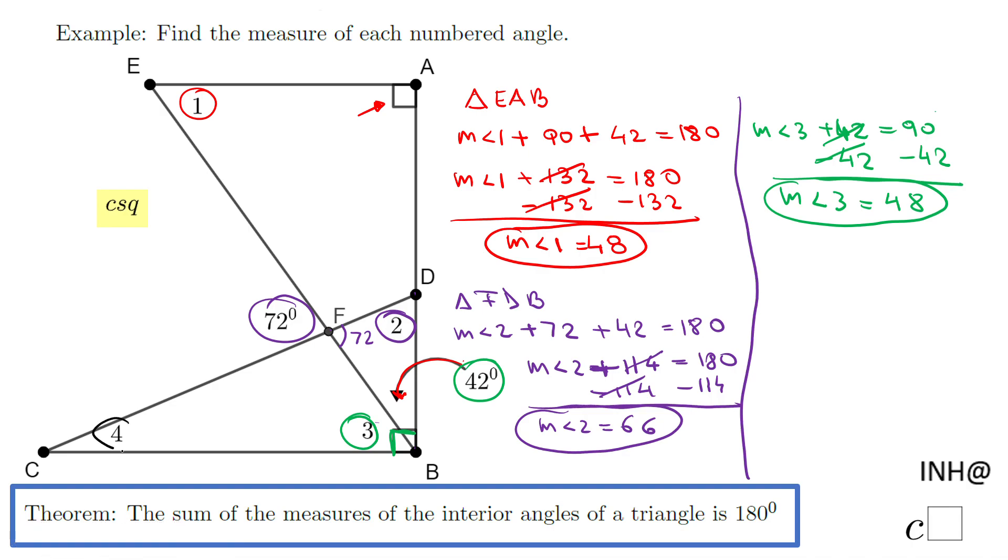Angle 4 is right here. We have choices—we can use triangle CFB, we can find the supplementary angle of 72, but we can also use this triangle CDB, which is a right triangle. We can say the angle 2 and angle 4 are complementary because this is a right triangle and the acute angles need to be complementary.